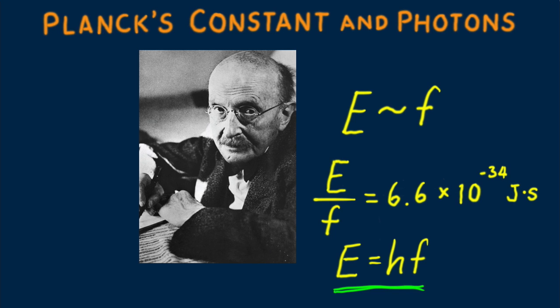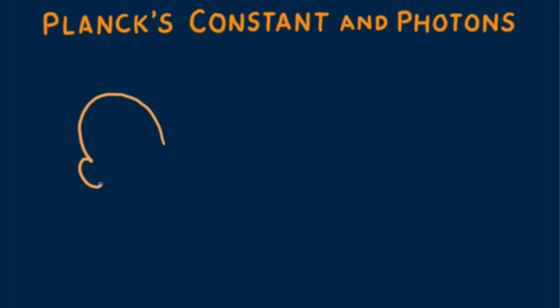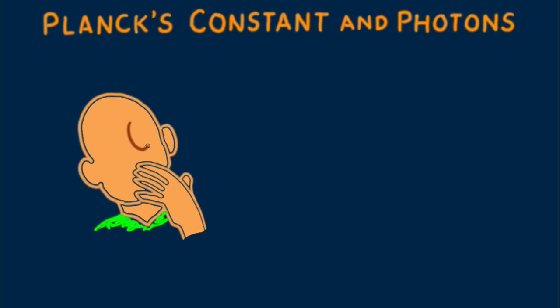The equation E equals hf gives the smallest amount of energy that can be converted to light with frequency f. Interestingly, the equation E equals hf can get personal. It tells us why microwave radiation can't do the damage to molecules in living cells that ultraviolet light and x-rays can do.